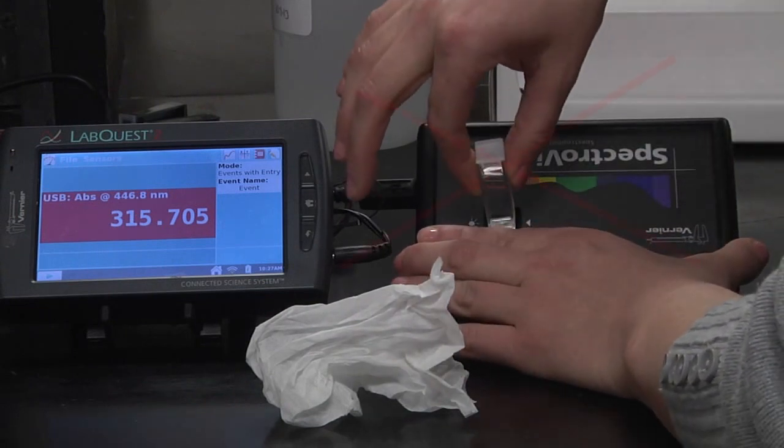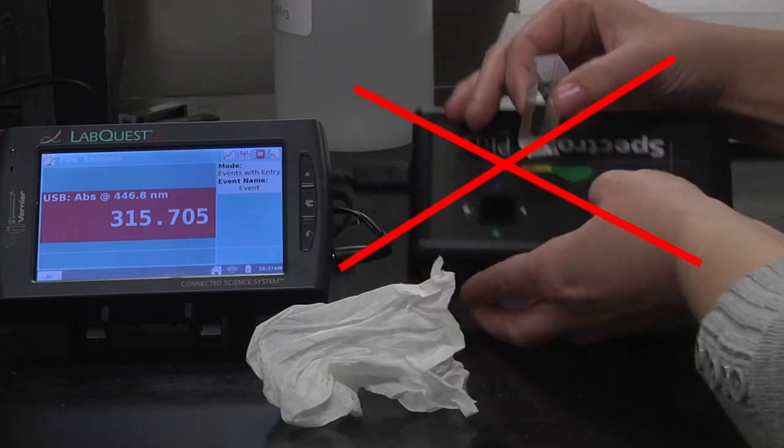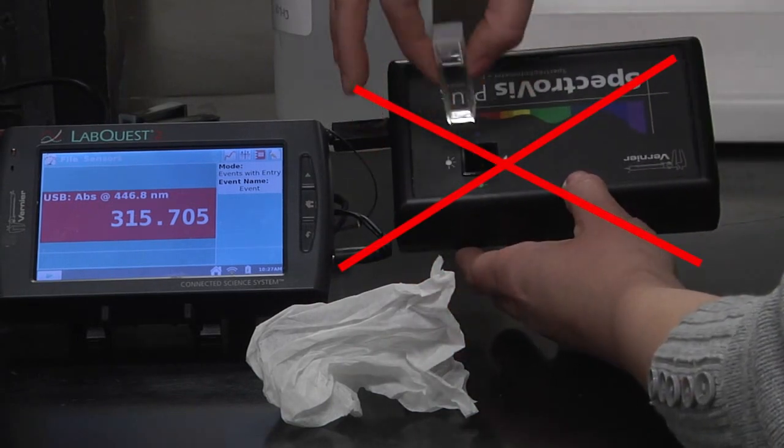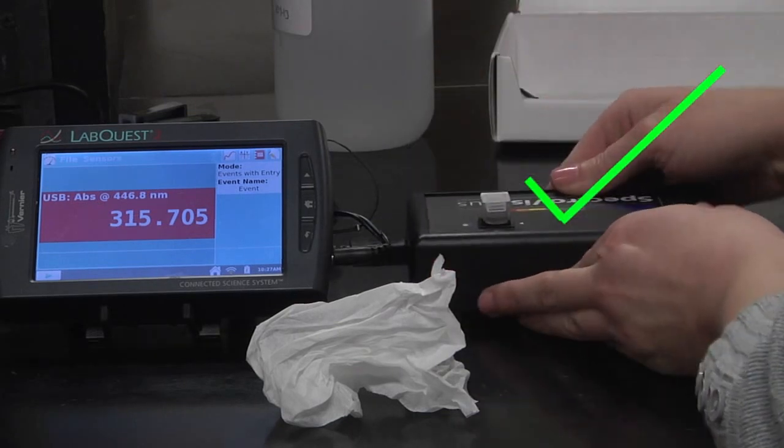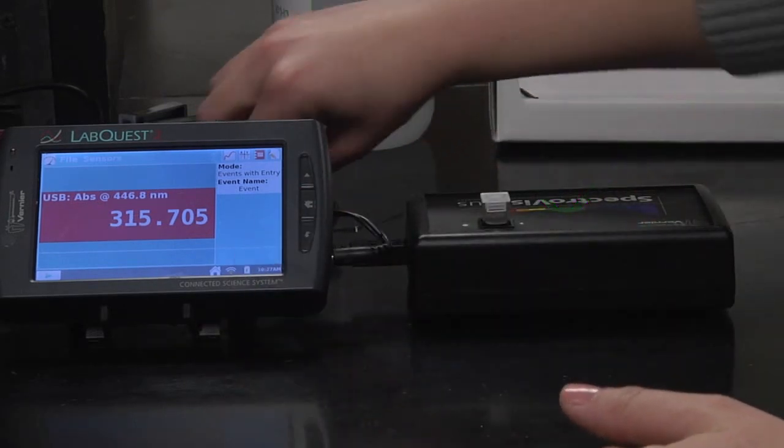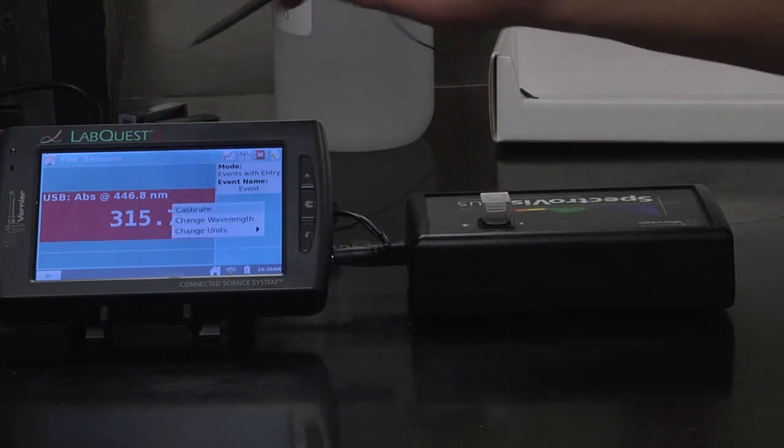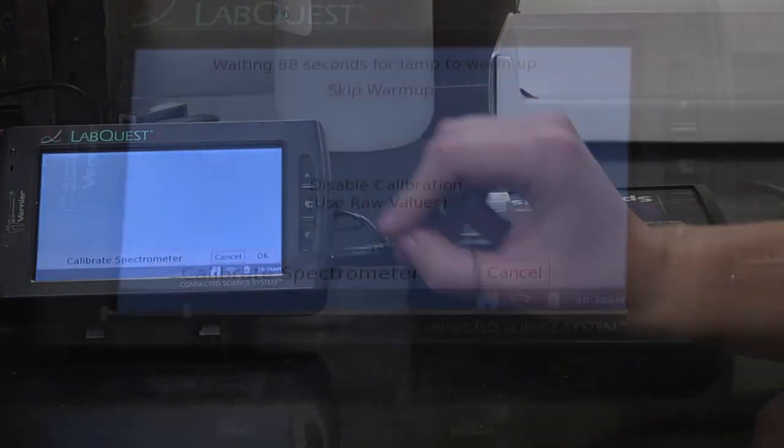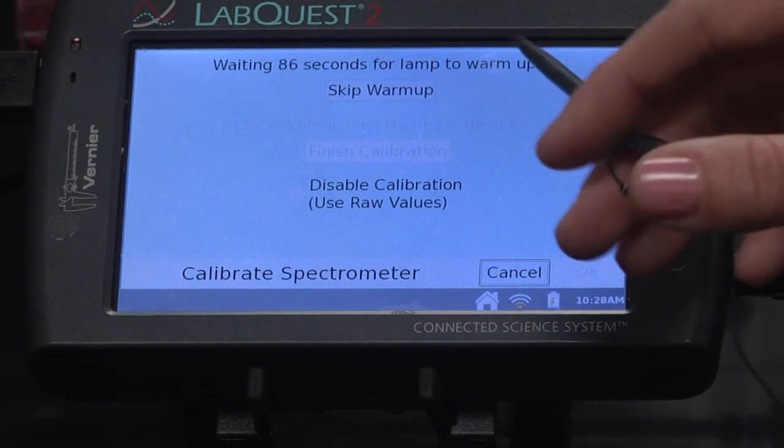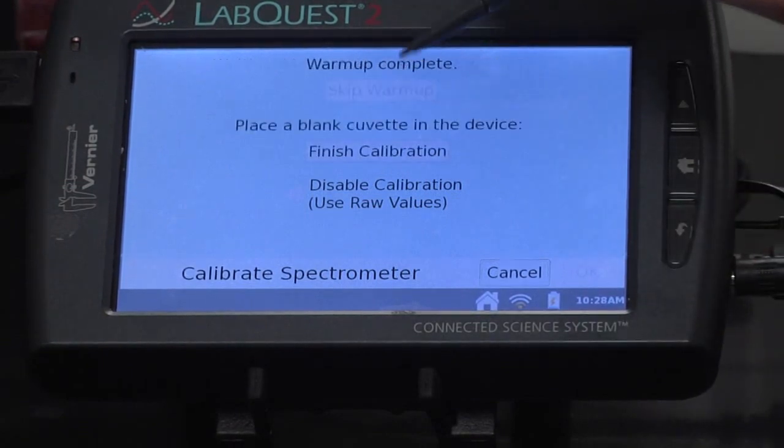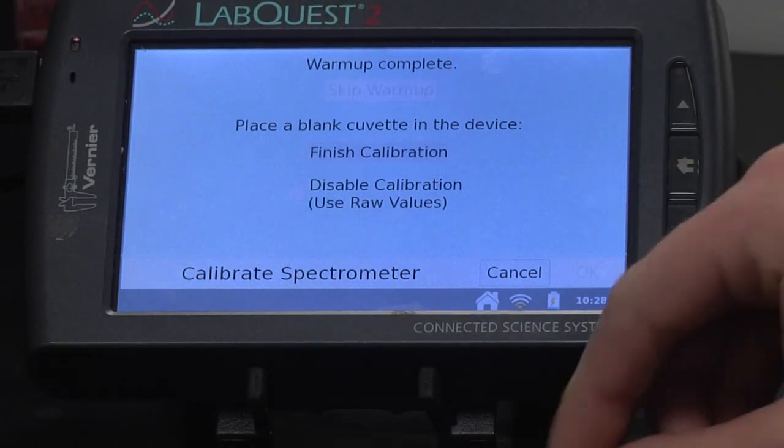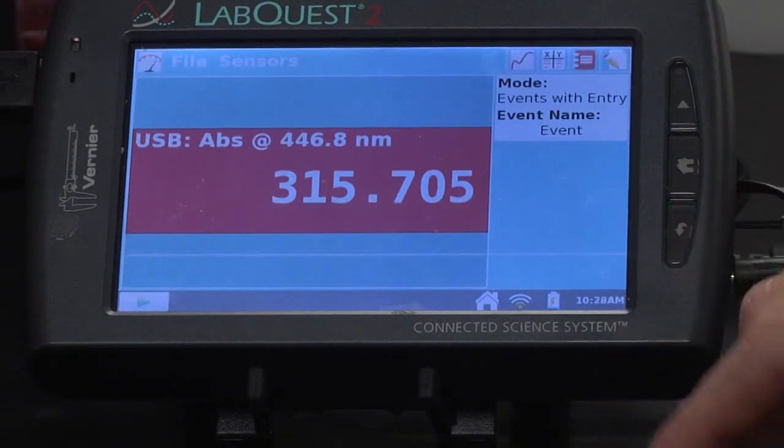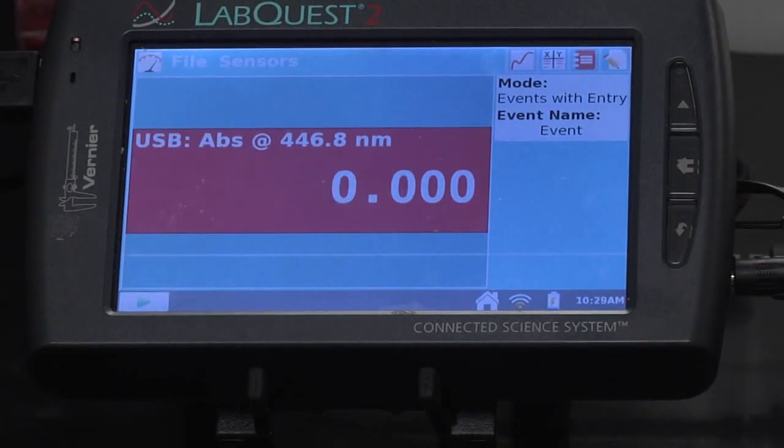Now you're going to want to tap the red screen and then click calibrate. It says to warm up, but I'm already warm. Place a blank cuvette in the device. Already did that. Finish calibration. If the solution is clear, then there should be zero light absorbed.